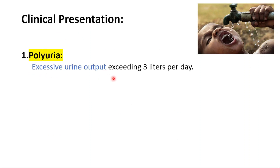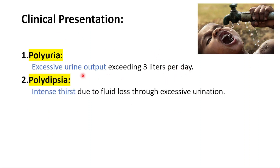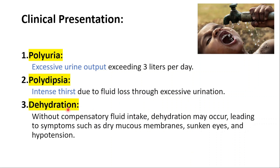Regarding clinical presentation, we have polyuria, which is excessive urine output exceeding 3 liters per day, and polydipsia, which is intense thirst due to fluid loss from excessive urination. Without compensatory fluid intake, dehydration may occur, leading to symptoms such as dry mucous membranes, sunken eyes, and hypotension.